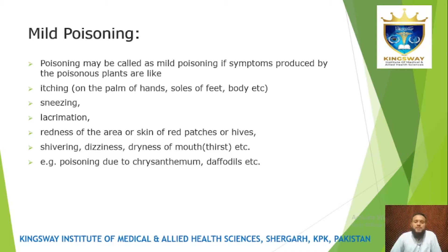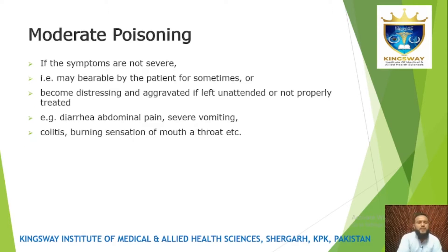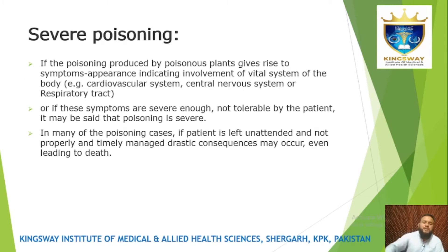The symptoms produced by poisonous plants include itching, redness of the area, skin rashes or hives, dizziness, dryness. Other symptoms include diarrhea, abdominal pain, severe vomiting, colitis, burning sensation of the mouth and throat — these are considered mild symptoms.